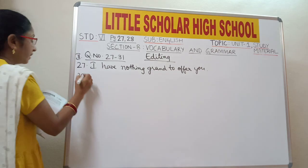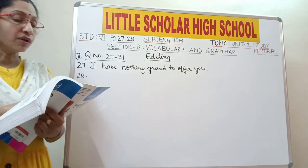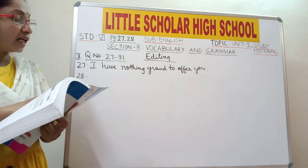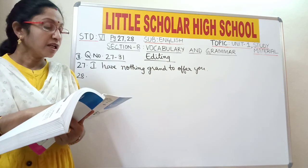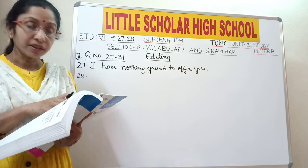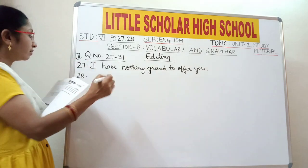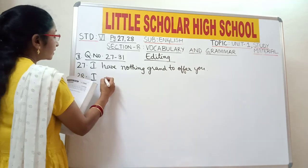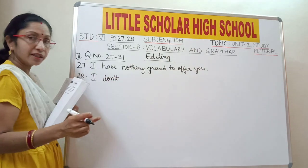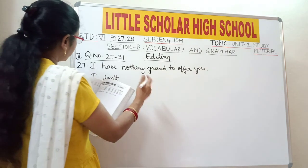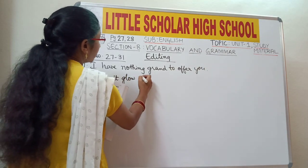Question number 28: 'I didn't glow or sing, but what I have I give with my heart.' The word 'didn't' is in past tense, but according to the passage it should be in present tense. So 'didn't' should be replaced with 'don't'. Write: 'I don't glow or sing.' Don't is present tense, didn't is past tense.